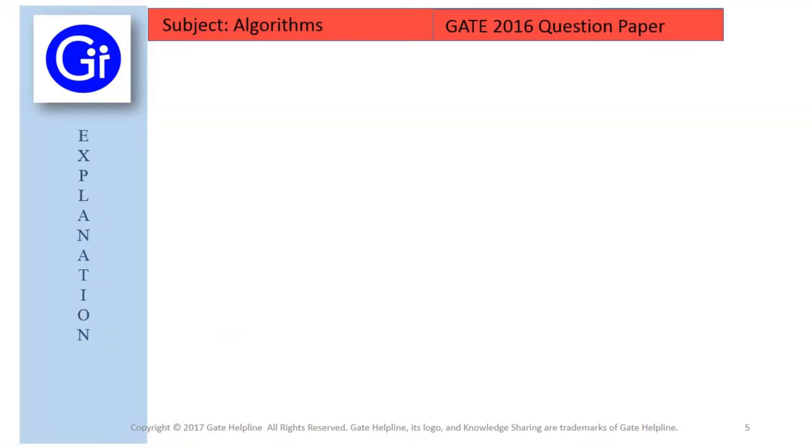So friends, now we will see the explanation to this question. In this question we are given a program with a max function which is used to calculate the maximum value out of the array. int star p and int n are the parameters which are passed. After that we have declaration for int a equals to 0 and b equals to n minus 1.